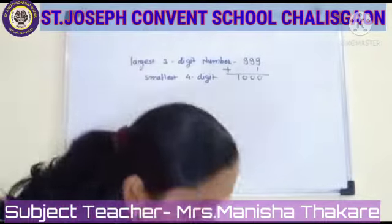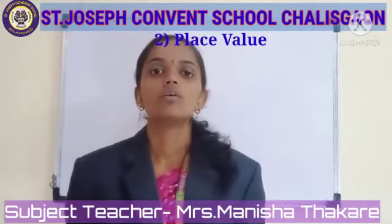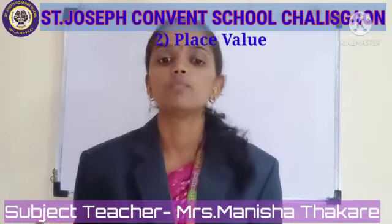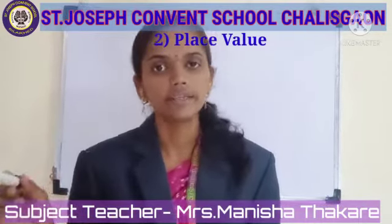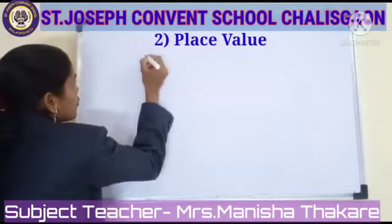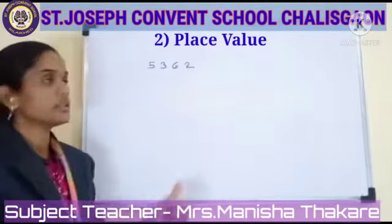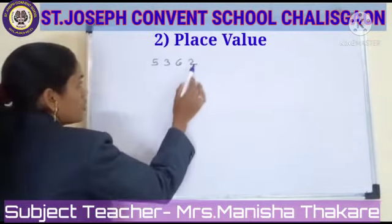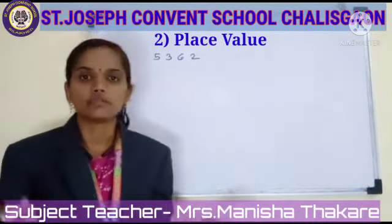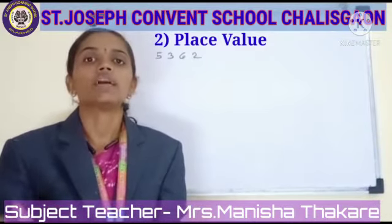Our next topic is Place Value. Place Value means the place value of a digit in a number determines the position of that digit in the number. For example, we take the number 5,362. This is a 4-digit number: 1, 10, 100, 1000. Place Value is determining the position of that place.